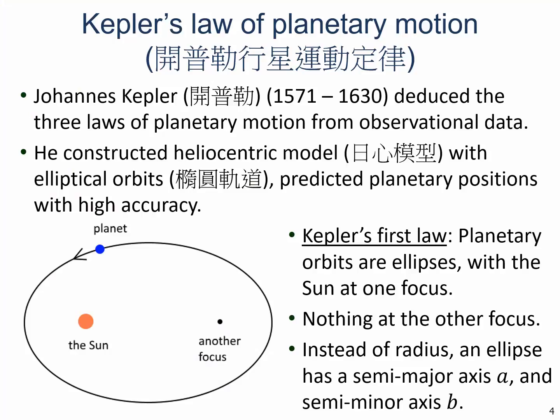A couple hundred years ago, Kepler deduced three laws of planetary motions from observational data. He constructed a heliocentric model, proving that all those planets orbit around the Sun with elliptical orbits, and he predicted those planetary motions with very, very high accuracy. The first law is that planetary orbits are ellipses with the Sun being at one of the two foci. At the other focus, there is nothing.